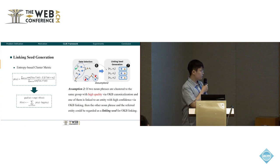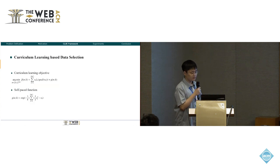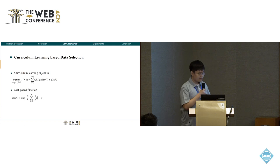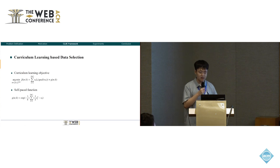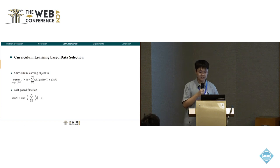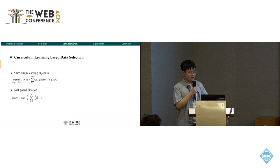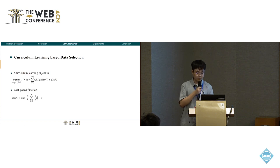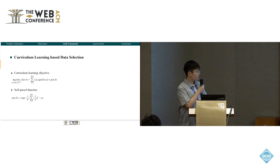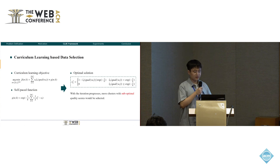A high uncertainty means a low quality cluster. Based on these two metrics, we can obtain scores for each linking pair and canonicalization cluster. However, apart from the scores, a criterion is also needed to classify these scores into high quality ones and low quality ones. Considering that a fixed threshold is not flexible enough, we employ curriculum learning to select data adaptively as iteration progresses. In the initial iteration, we need a relatively high threshold to filter out noise. And as the iteration progresses, the knowledge in our framework becomes more precise, so more clusters can be viewed as high quality clusters to generate new seeds.